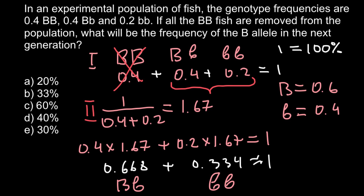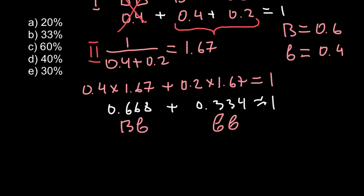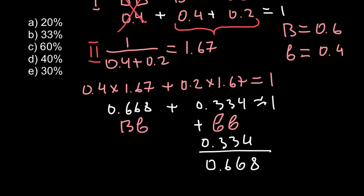We repeat the same calculation as in the first generation. Each genotype is made of two alleles, so we take half of the heterozygous frequency (0.334) and add it to the homozygous recessive frequency: 0.334 plus 0.334 gives a new recessive allele frequency of 0.668. Since we subtracted 0.334 from the heterozygous side, the dominant allele frequency is 0.334.